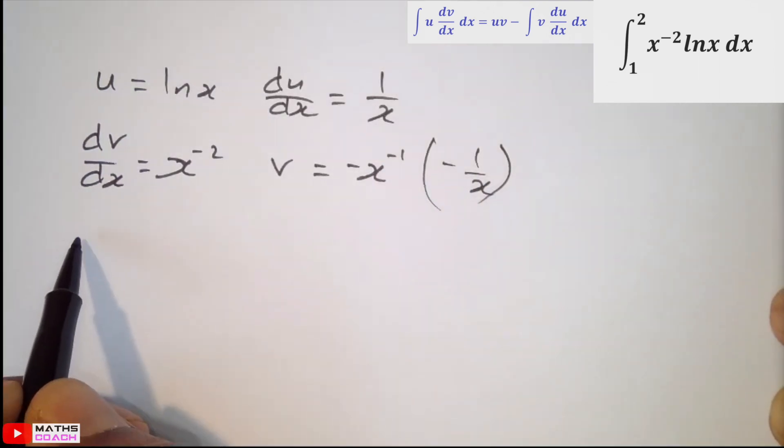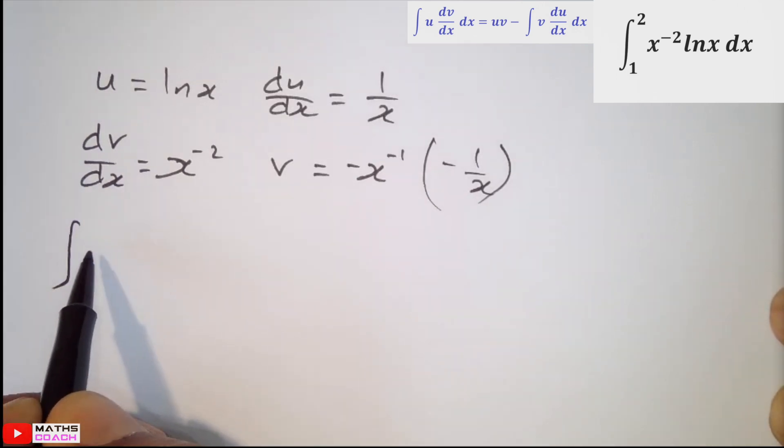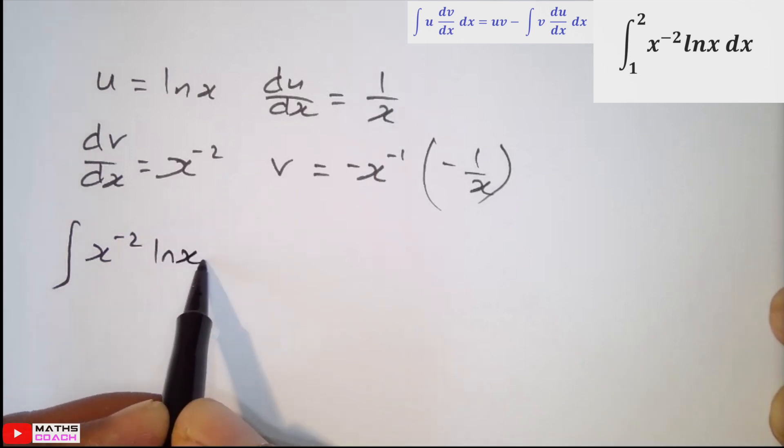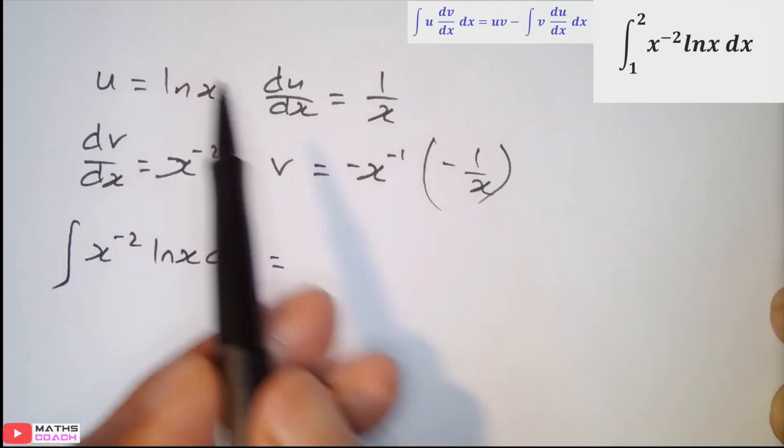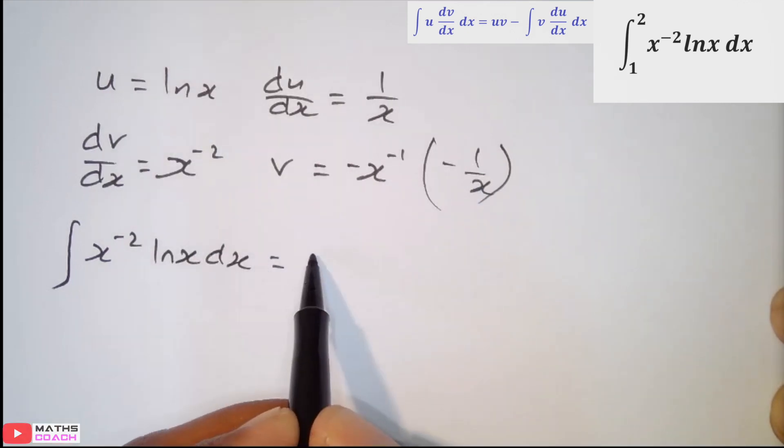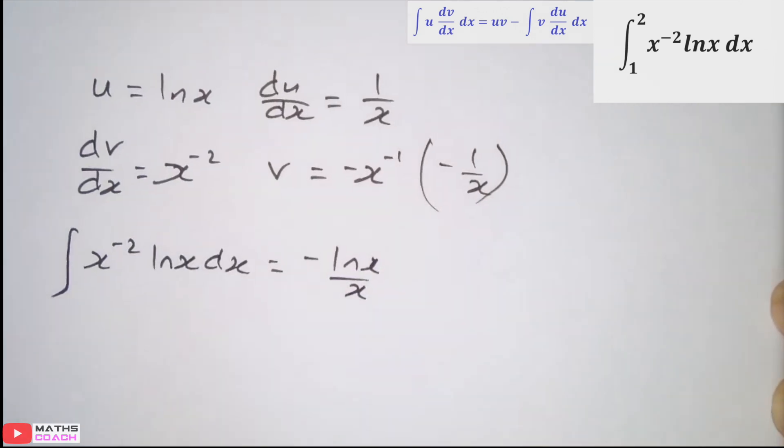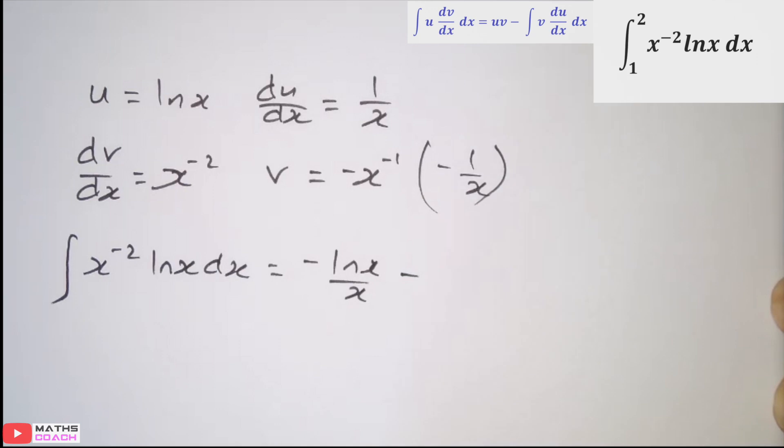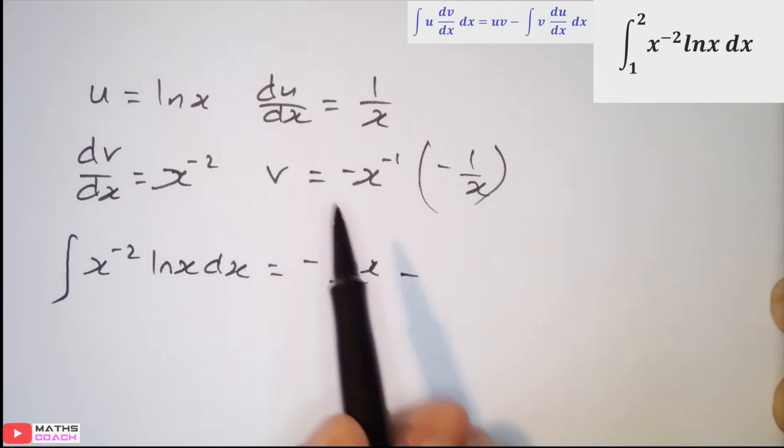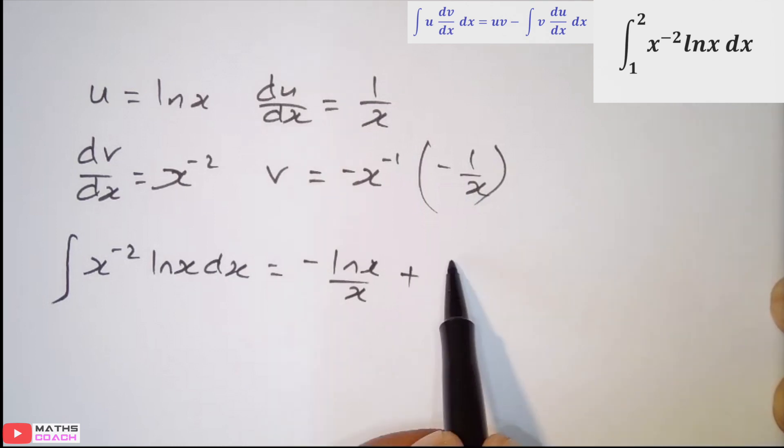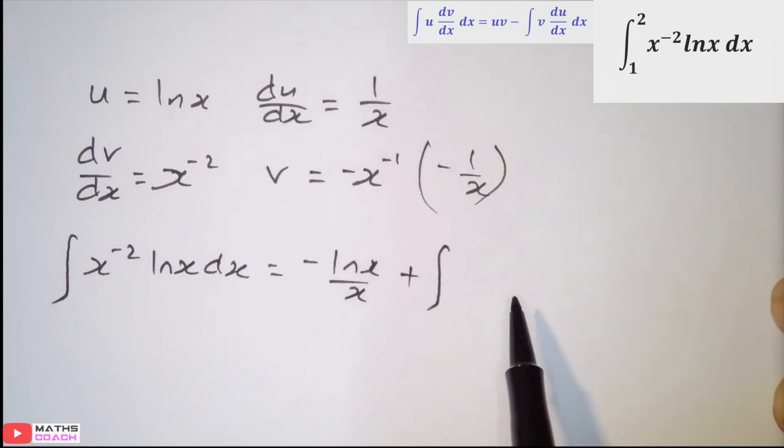So let's begin our parts formula. We need to integrate x minus 2 ln x dx. And we start off with uv. So ln x times minus 1 over x can become minus ln x over x. Minus by default, because we now need to multiply these two. However, I see another negative here. So that becomes plus integration of these two. When you get the product of that, you get 1 over x squared.